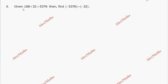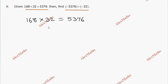Question 8: 168 into 32. Working out the division: 5376 divided by 32. Performing long division step by step: 53 divided by 32, bringing down digits and calculating remainders through each step.